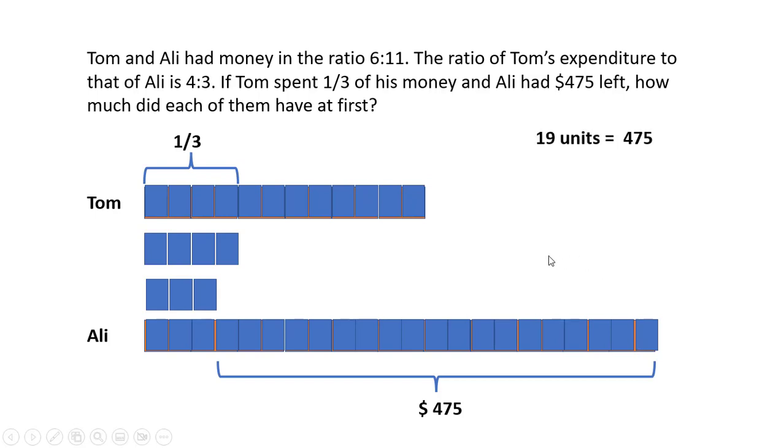And the number of units that is left here is 19 units. So 19 units is represented by $475, and so 1 unit will be 475 divided by 19, which is equal to 25.